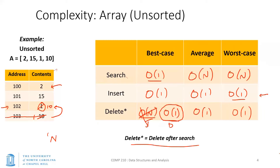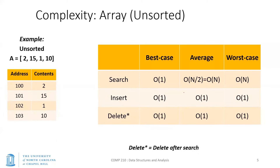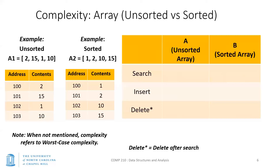The best case is generally not very interesting. The average case is also not very interesting because it's generally similar to the worst case. So we're generally going to focus on the worst case. If I don't mention the case and just ask for the complexity of an algorithm, assume we're talking about the worst case. For the rest of this lecture we'll assume worst case by default.